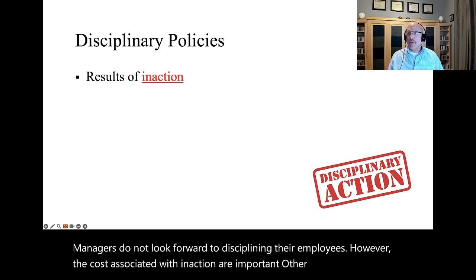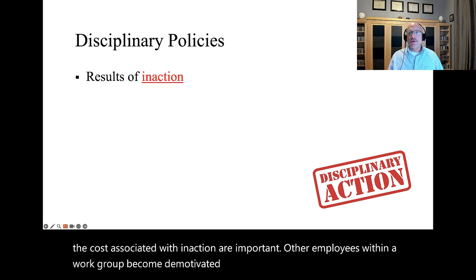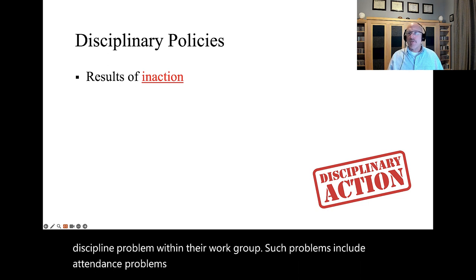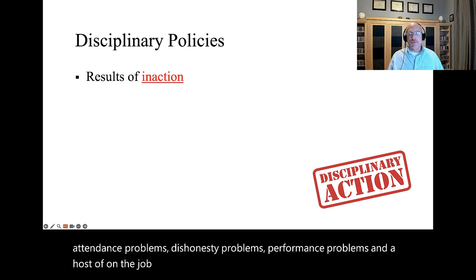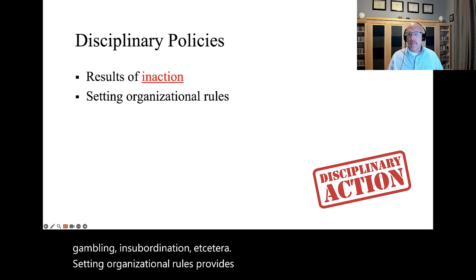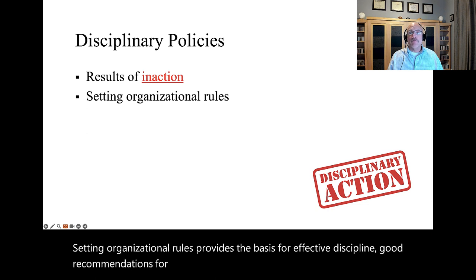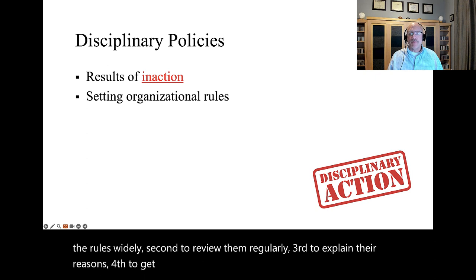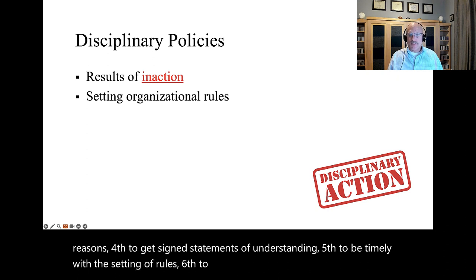Other employees within a workgroup become demotivated when a manager fails to address a discipline problem within their workgroup. Such problems include attendance problems, dishonesty problems, performance problems, and a host of on-the-job problems like sexual harassment, sleeping on the job, gambling, insubordination, etc. Setting organizational rules provides the basis for effective discipline. Good recommendations for setting discipline rules include: first, to publish the rules widely; second, to review them regularly; third, to explain their reasons; fourth, to get signed statements of understanding; fifth, to be timely with the setting of rules; sixth, to be reasonable in their setting; and seventh, to keep the rules in writing.